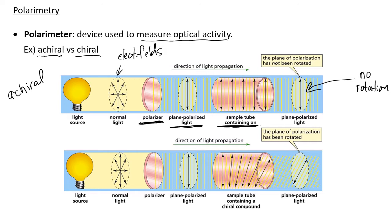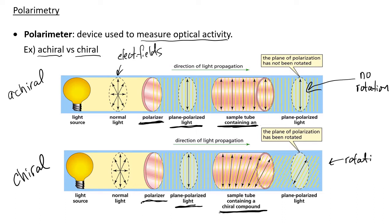An achiral compound gives you a reading of zero degrees — the angle of rotation would be zero. For a chiral compound, the plane polarized light passes through the sample tube and that light will be rotated to a certain degree, either to the left or to the right, into the plus or minus direction. If a rotation occurs, you have an optically active compound. If there's no rotation, that could indicate you have an achiral compound, or a 50-50 mixture of enantiomers, which is called a racemic mixture.